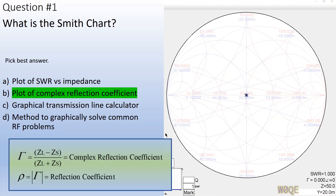Answer B is the best answer by far. Most definitions of the Smith Chart include complex reflection coefficient in the first sentence of the definition. Answers A, C, and D are all correct, but they are not how the Smith Chart is built — they are telling you what the consequences of having it built are. Answer C was the title of the original paper that Philip Smith wrote about the Smith Chart, and that's what he called it.